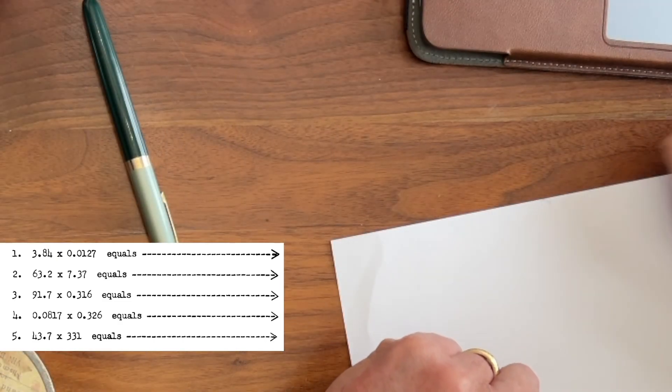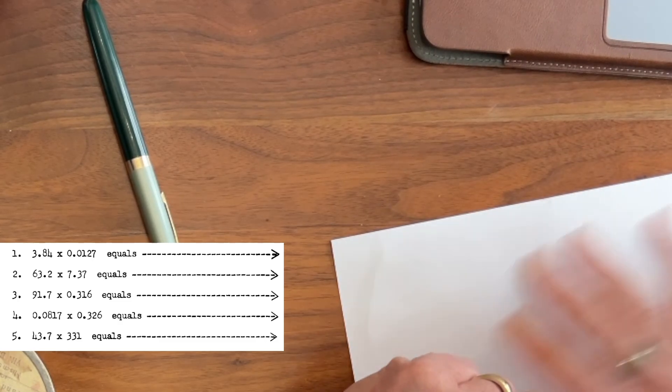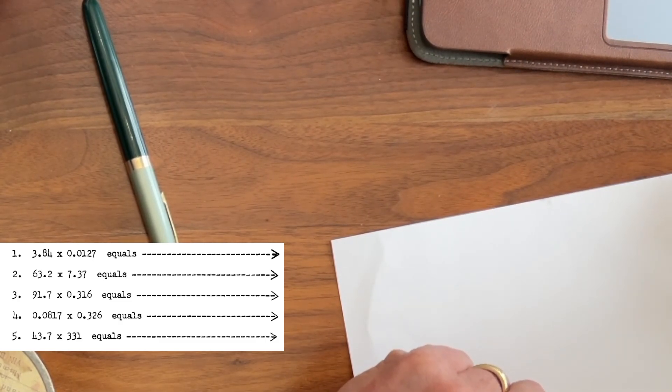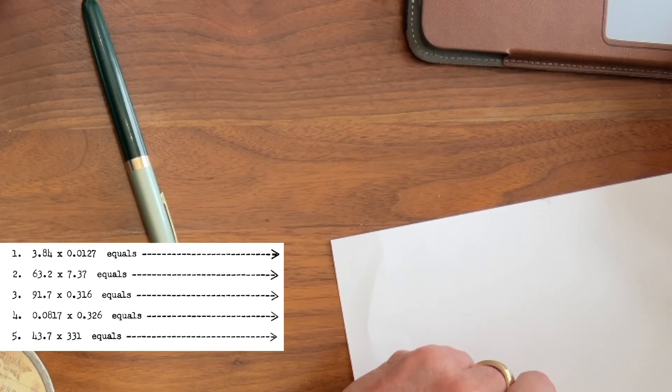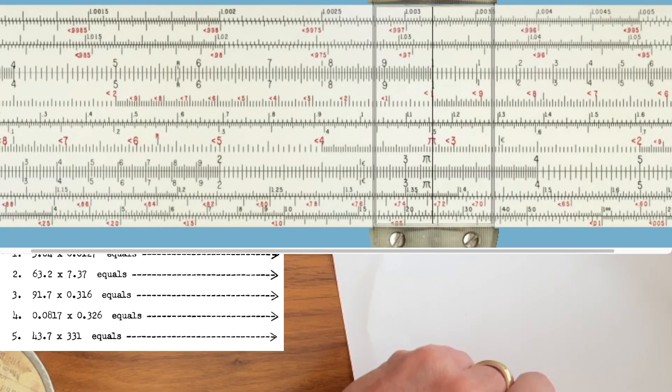Let me show you how we're going to do this. First of all, down in the left corner, we're going to have the five test questions that we're going to address today. Next to it, we're going to have my notes on how to solve these problems. And then finally, up top, we're going to have a working Picket N3 Slide Rule. There's a link to this slide rule in the description of the video.